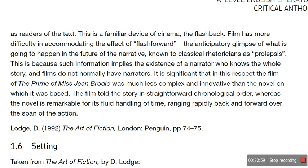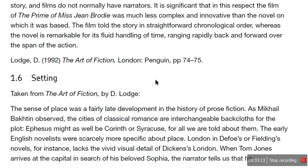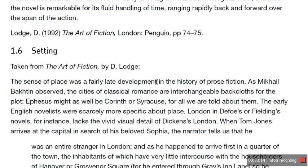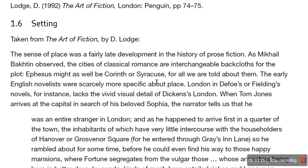TV series have an easier way of doing this than films do because they can give you a flash forward of several episodes ahead. The film of The Prime of Miss Jean Brodie was much less complex and innovative than the novel on which it was based — the film told the story in straightforward chronological order, whereas the novel is remarkable for its fluid handling of time, ranging rapidly back and forth over the span of the action.